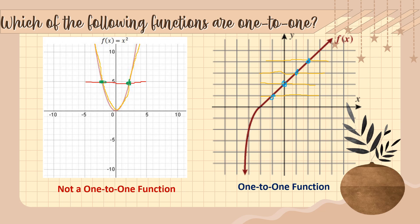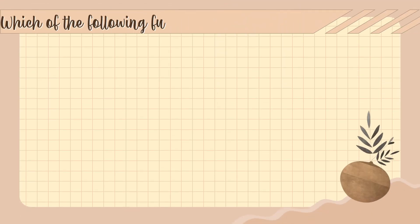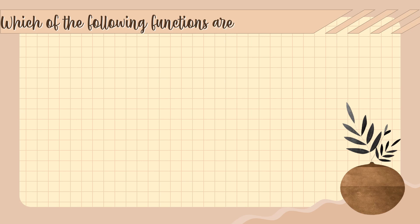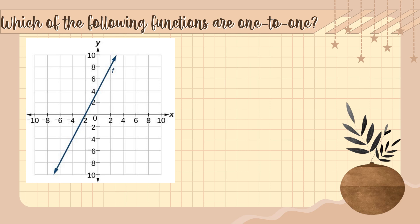Now let's look at another example. For graph number three, I draw a horizontal line and it hits the graph only once. Testing in the lower part and other positions, every horizontal line intersects the blue graph at most once.